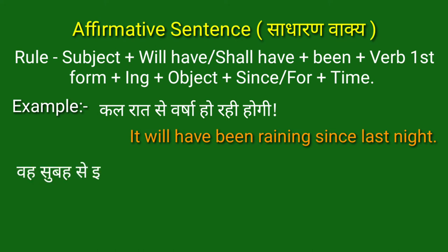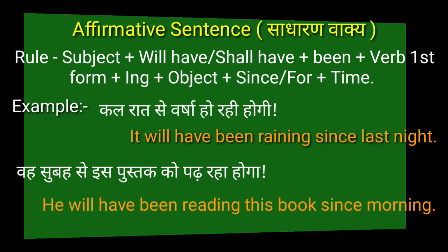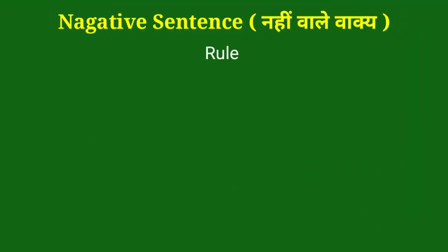Second example: वह सुबह से इस पुस्तक को पढ़ रहा होगा। — He will have been reading this book since morning. इस वाक्य में 'he' subject है, 'will have been' helping verb है, 'reading' verb की first form + ing है, बाकी object है।